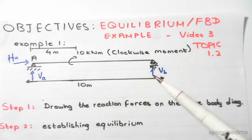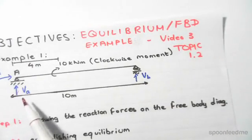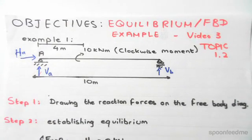Whereas a pin is restrained vertically and horizontally, as you can see here. So we draw a vertical and horizontal reaction force. After we've drawn in our reaction forces, we have established our free body diagram.